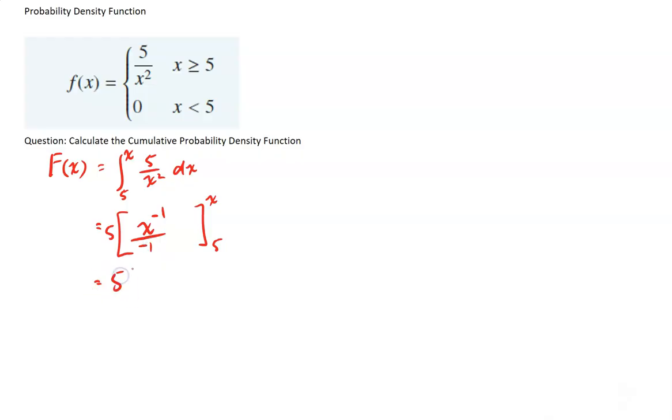All right, so it's just 5 bracket negative 1 on x, between x and 5. All right, so I'm just going to sub x in, and then I'm going to sub 5 in. So it's going to be 5 times negative 1 on x minus negative 1 on 5.